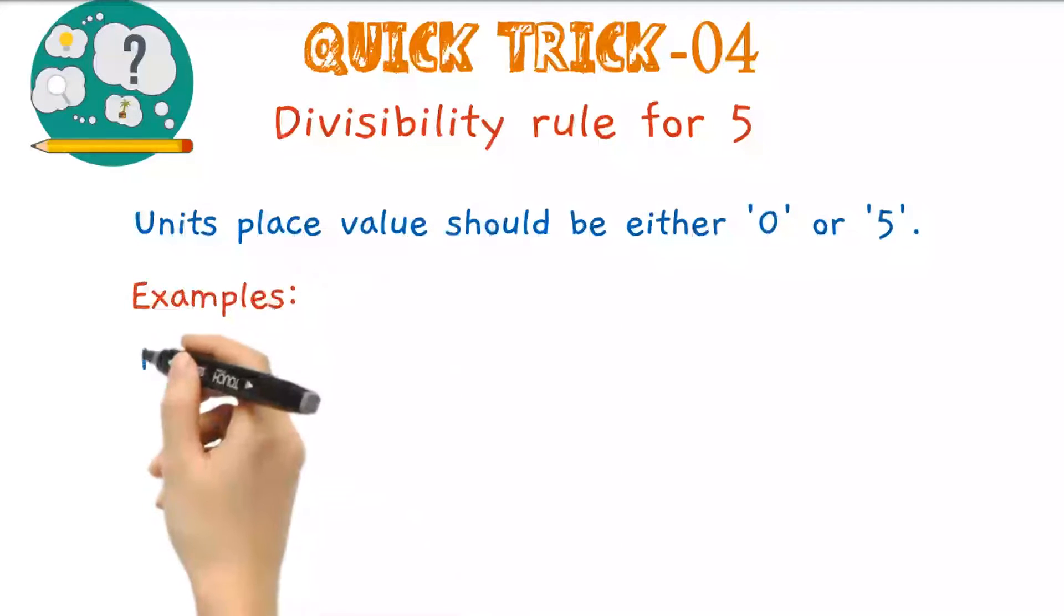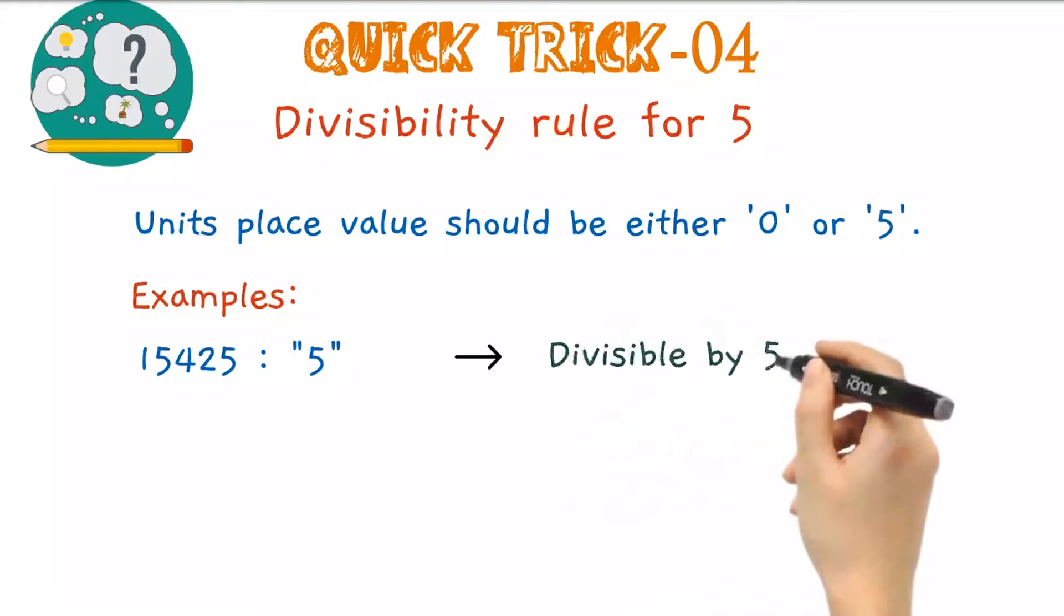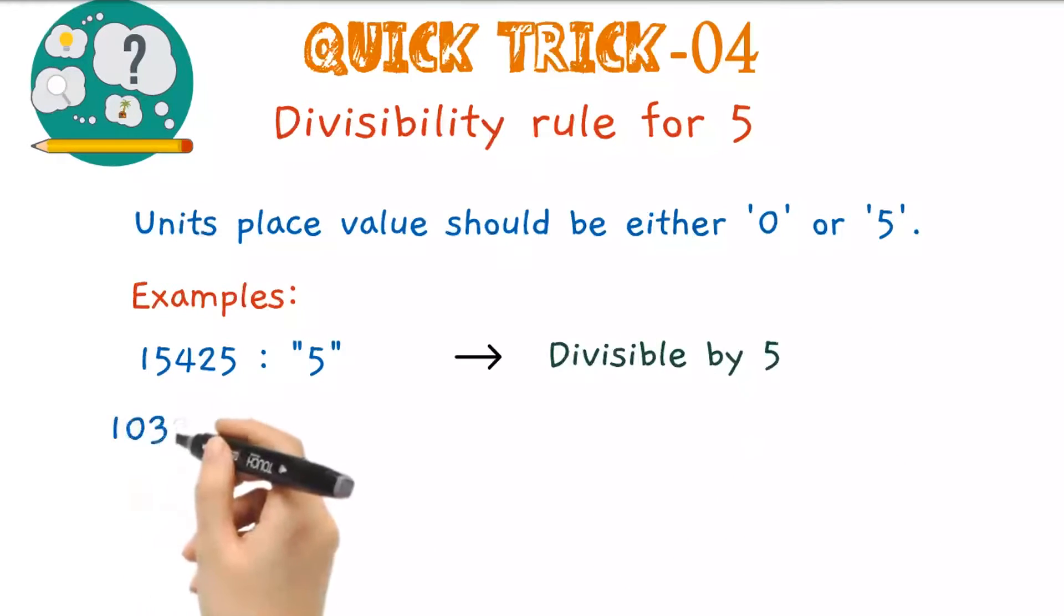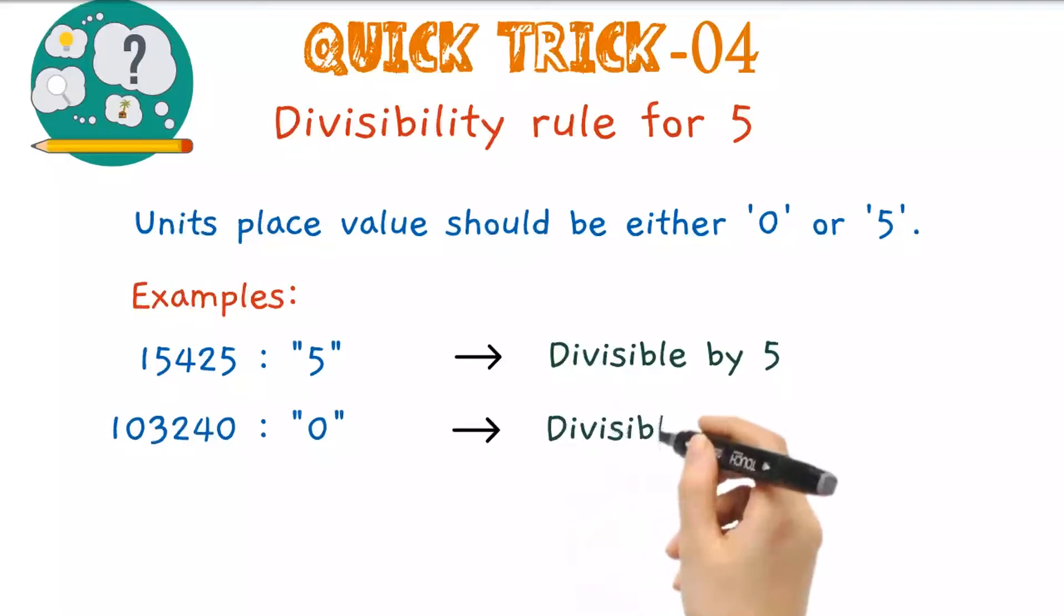Let us see some examples. 15,425 - its unit's place value is 5, such that the given number is divisible by 5. Next, 103,240. As the unit's place value is 0, it is also divisible by 5.